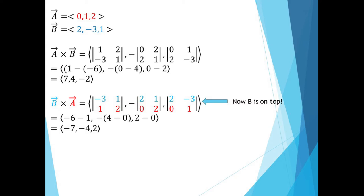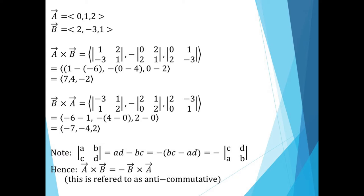If we reverse the order and look at b cross a, then the components of b now go in the top row of each determinant and we get the vector negative 7, negative 4, 2, which is the opposite of a cross b. In general when we switch two rows of a matrix, the determinant gets the opposite sign. So we can conclude that a cross b will always equal minus b cross a.